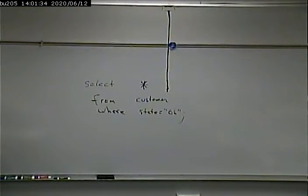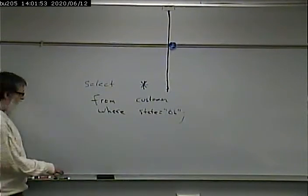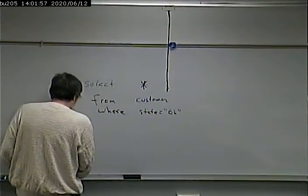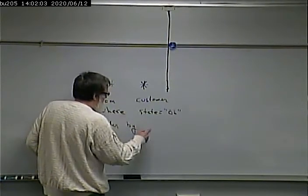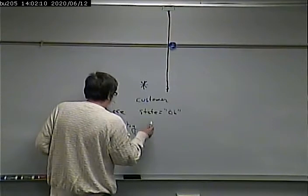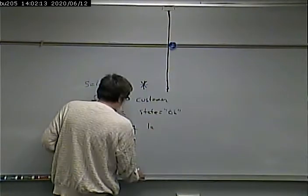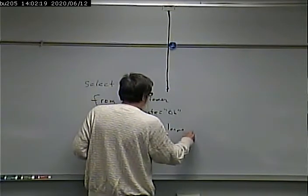We can make more involved conditions. We can say WHERE state equals Ohio AND city equals Cleveland, so that we would get only Cleveland, Ohio — we wouldn't get Cleveland, Mississippi. Lastly, for now, we can do an ORDER BY clause, which is a way of organizing and sorting the output. So I could say ORDER BY city, last name, first name.